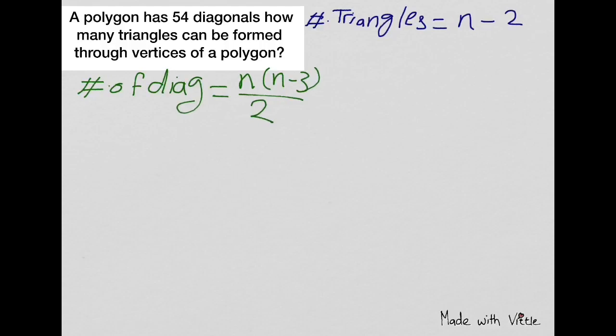The number of diagonals here is 54, so 54 equals n times the quantity n minus 3 divided by 2. Multiply each side by 2. 2 times 54 is 108, which equals n times n minus 3.